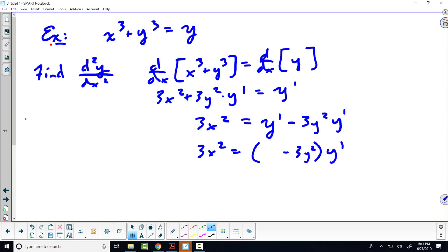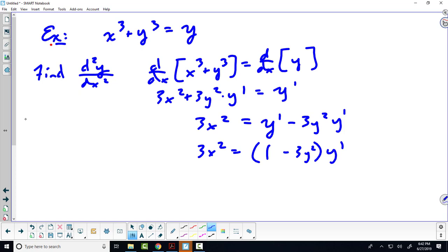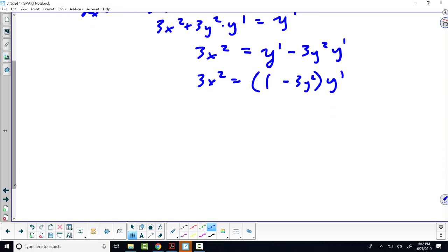Now we're ready to solve for y prime, to isolate that y prime. That gives us y prime equals 3x squared over 1 minus 3y squared. We found the first derivative.